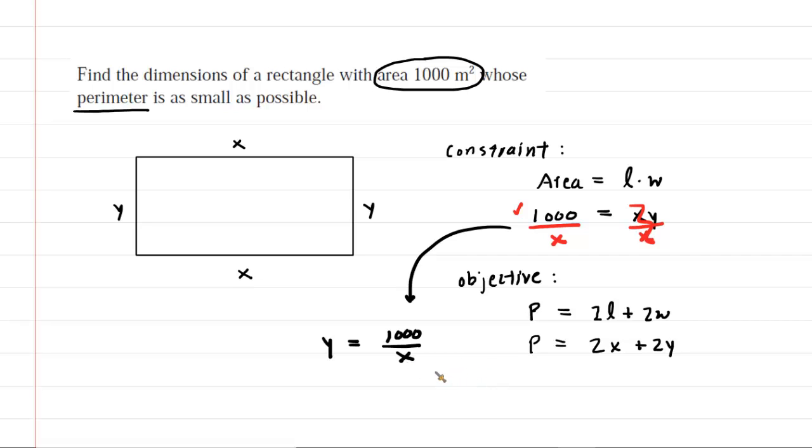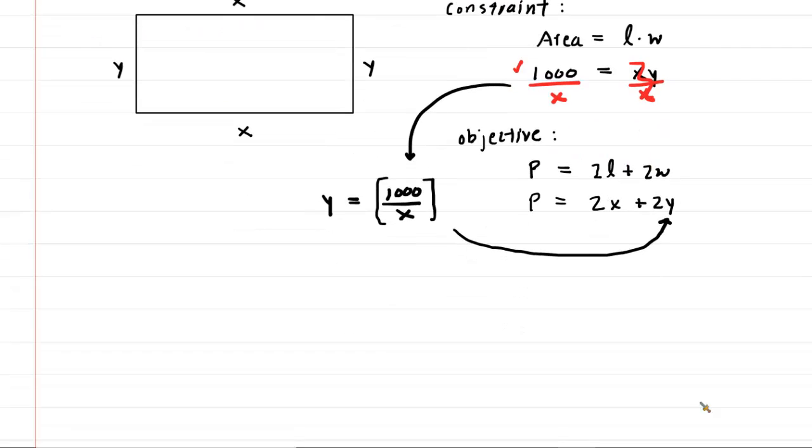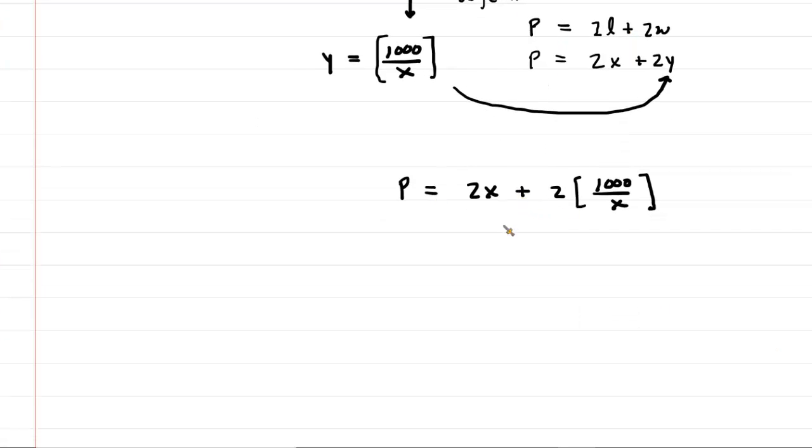And then the next thing we do is we substitute that into our objective. So we're going to take the expression 1000 divided by x and substitute that in for the y into our objective equation. So now we have the perimeter equaling 2x + 2(1000/x). This gets our objective equation into a single variable term. We can proceed by multiplying 2 by 1000, so we get 2x + 2000/x.